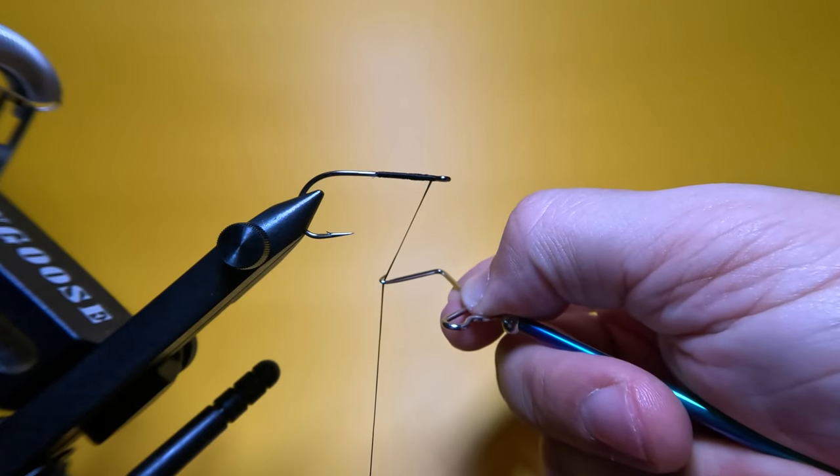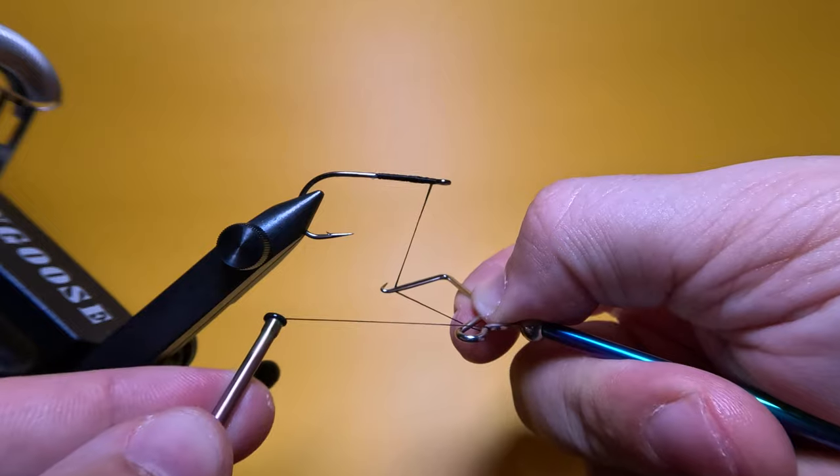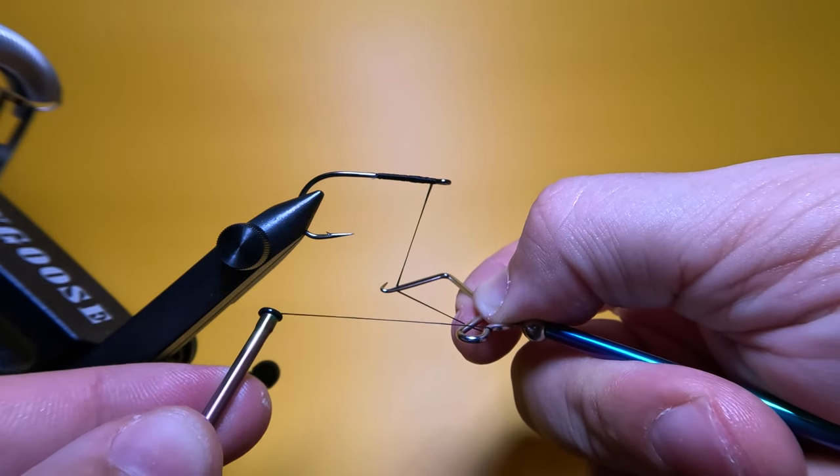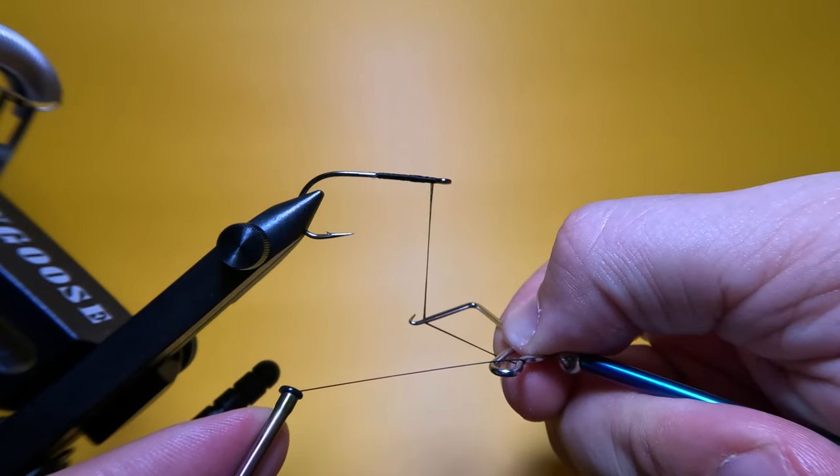And now while continuing to apply this tension here, we can take our bobbin and move our thread over to just catch that lower bend, just like that. So again, we hook our thread and move our bobbin over to catch that lower bend.